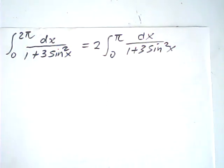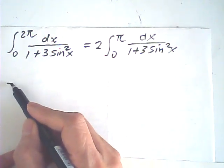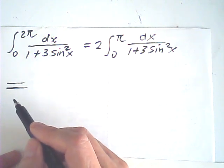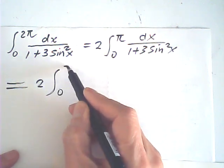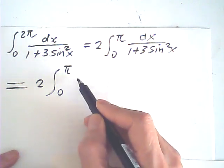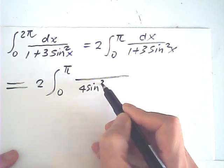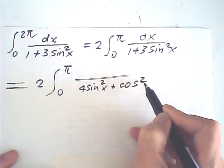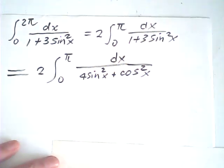Now then, for the denominator, this is sine square plus cosine square. Therefore, this is equal to 2 integral from 0 to π, dx over 4 sine square plus cosine square.